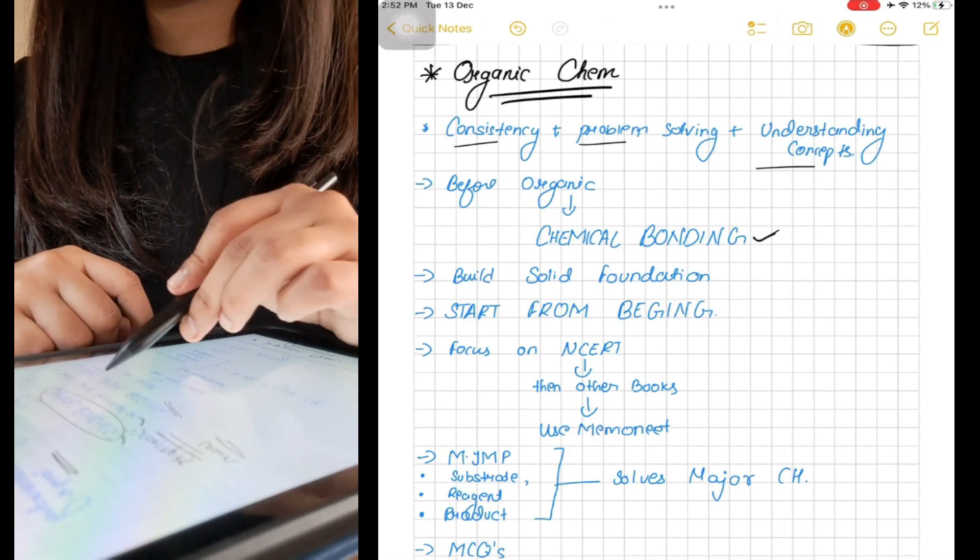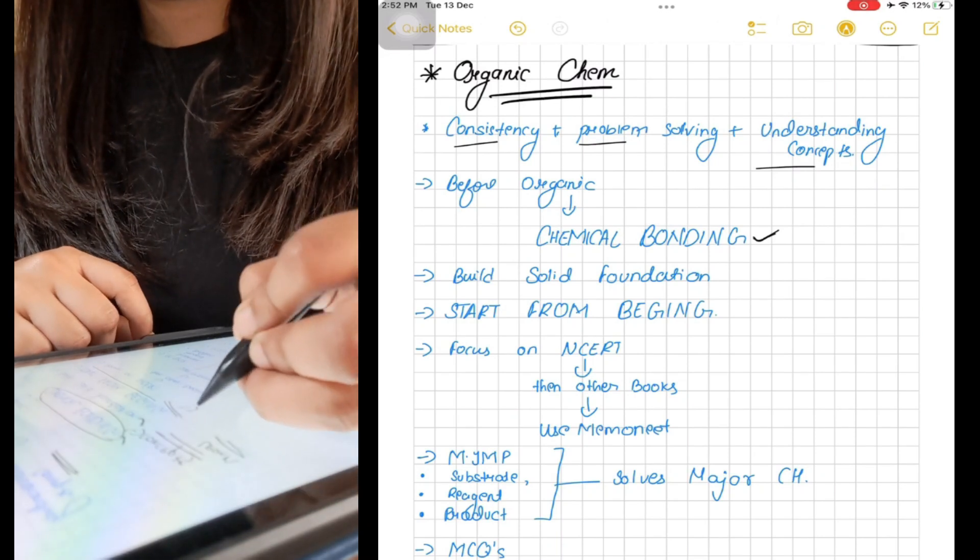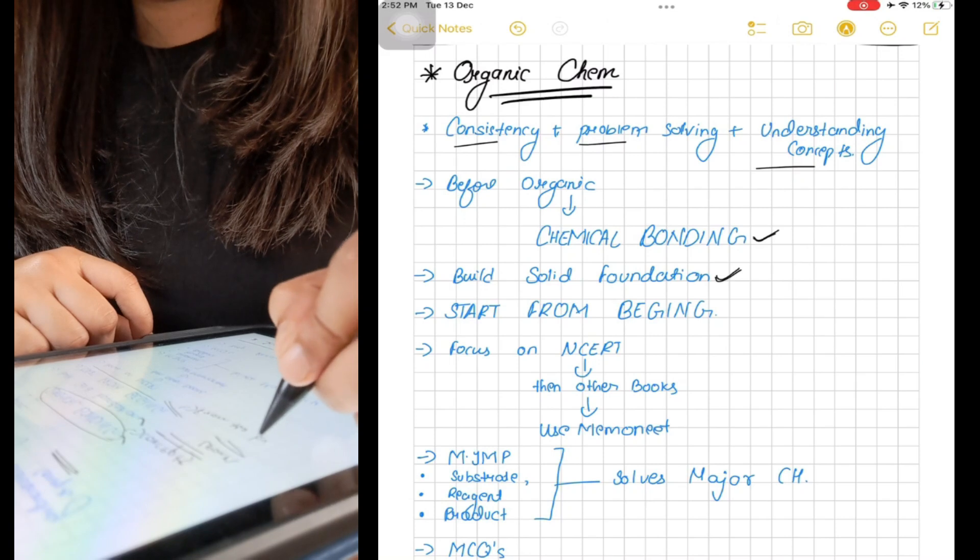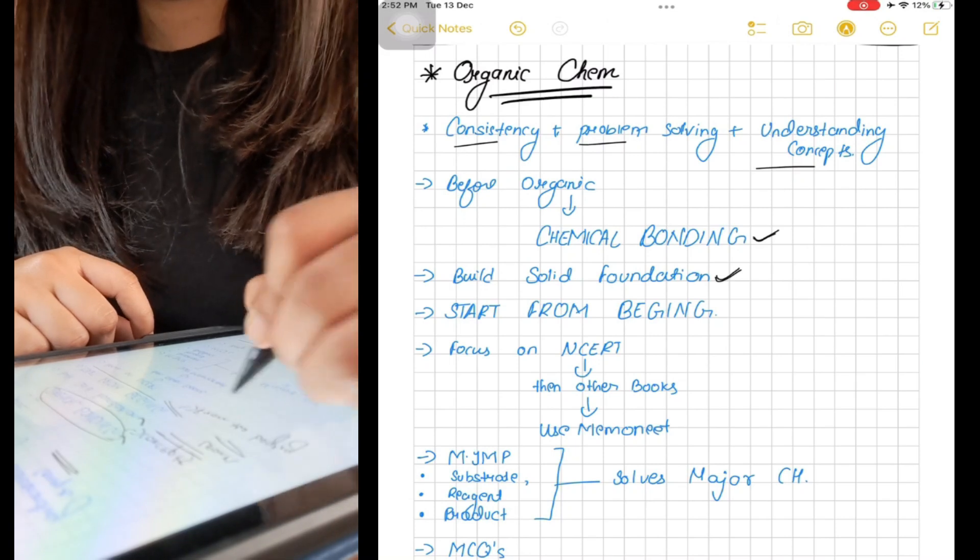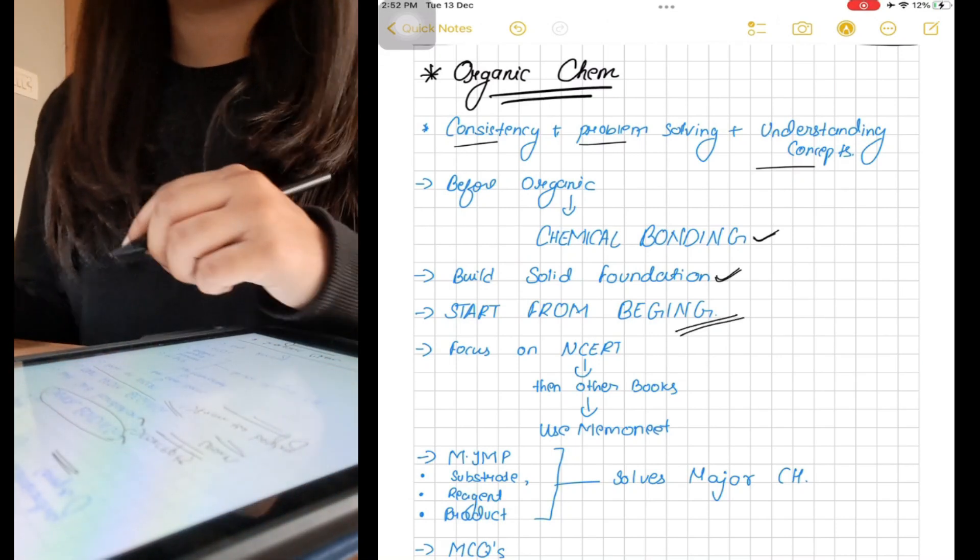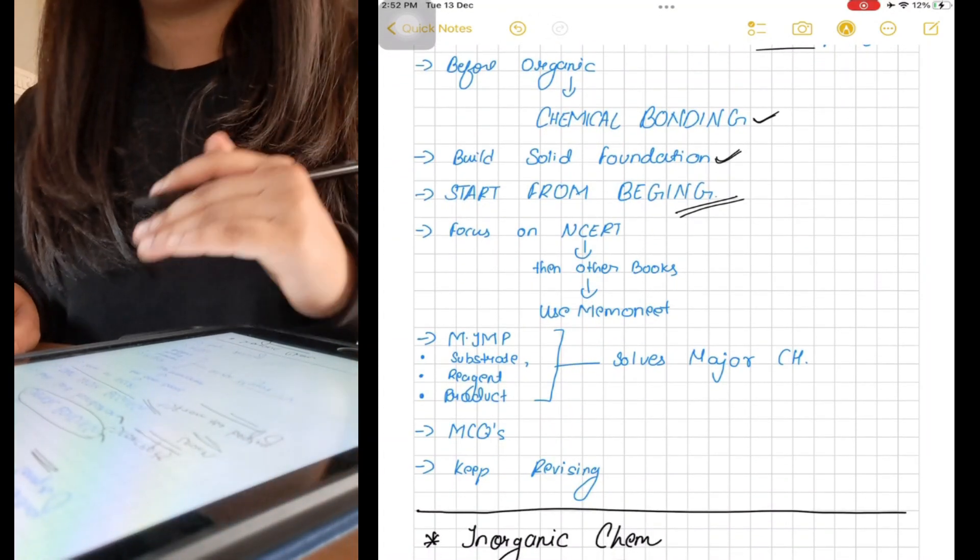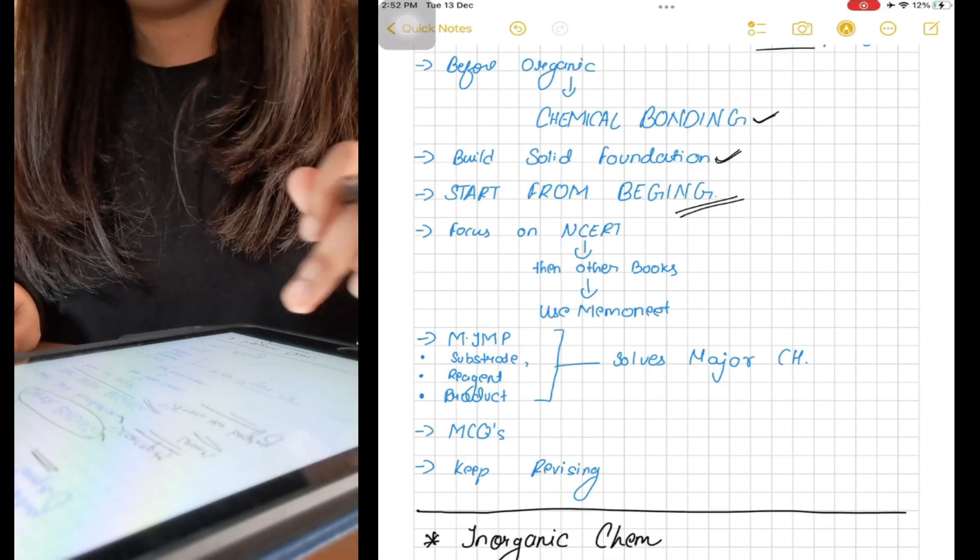Your basics are clear, the speed of your learning will gradually start increasing. Before starting organic chemistry, your concepts of chemical bonding must be clear. Build a solid foundation from the start. Try to focus more on understanding, not just memorizing the concepts. NCERT must be at your fingertips.